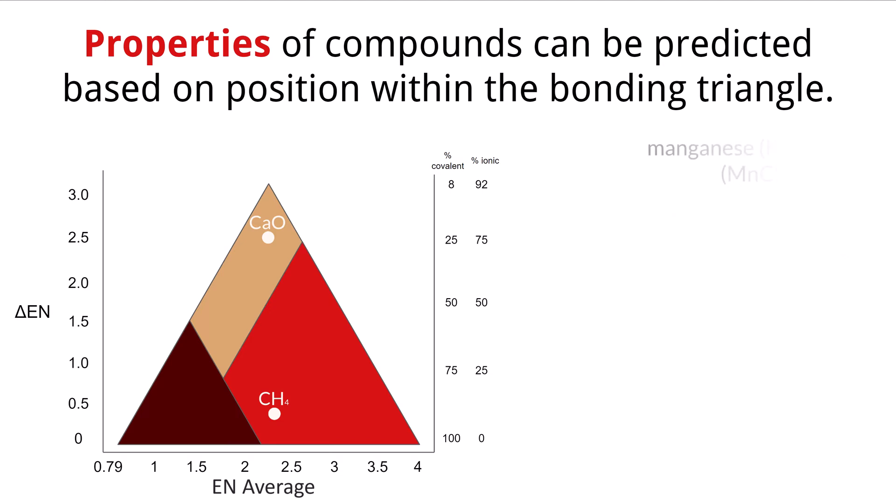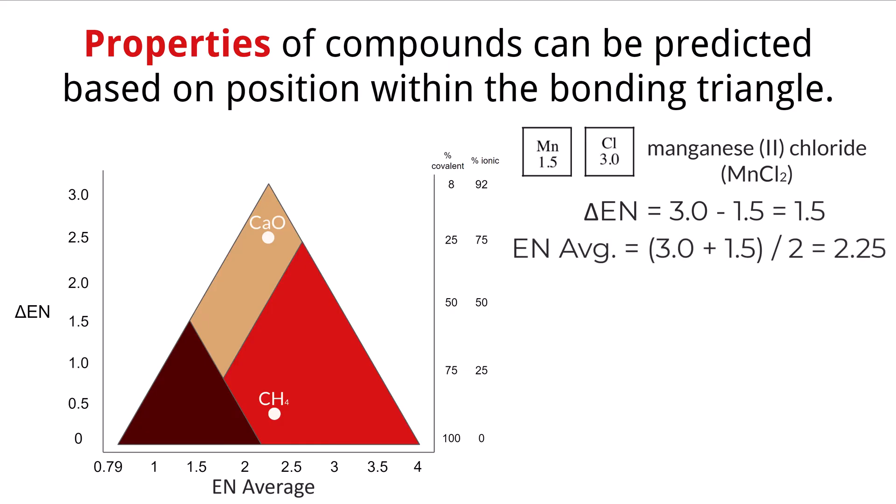Last example is manganese 2 chloride, MnCl2. We get an electronegativity difference of 1.5 and electronegativity average of 2.25. Let's see where that falls on our bonding triangle. This compound is a bit different. It falls into a range that is covalent, but almost ionic. It has a strong electronegativity difference, but not strong enough to be considered ionic. No matter what compound we calculate, they will all fall somewhere on our bonding triangle.